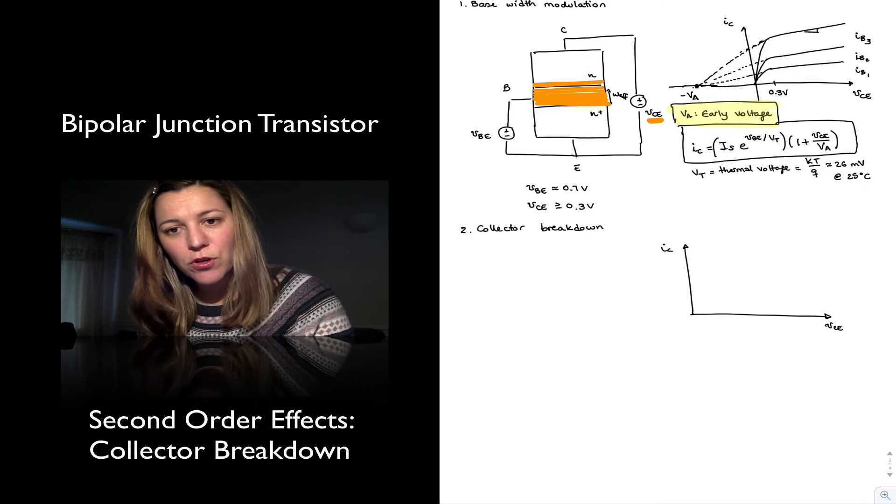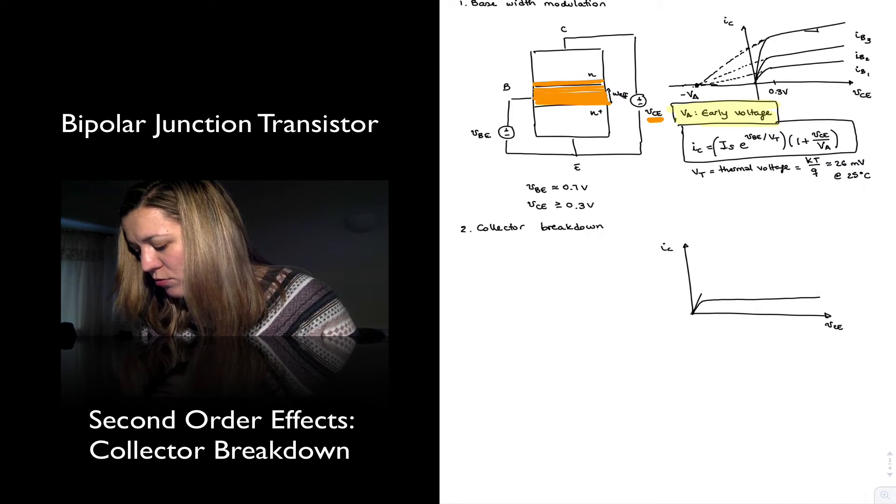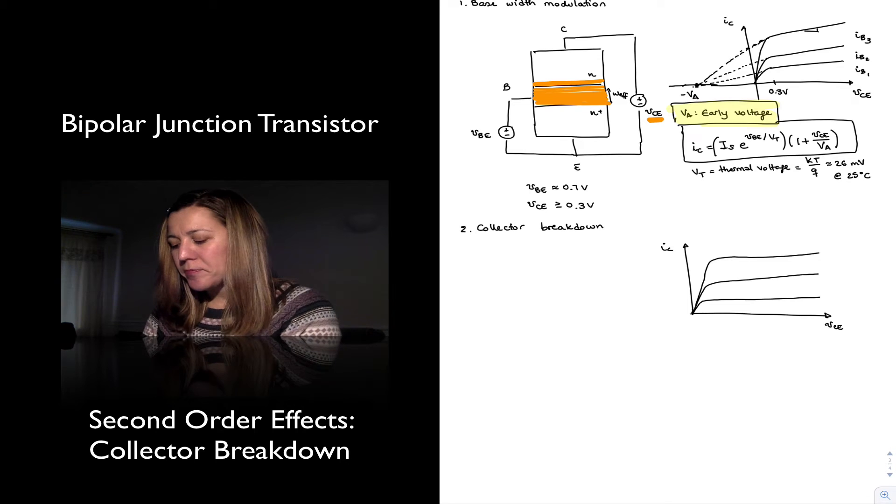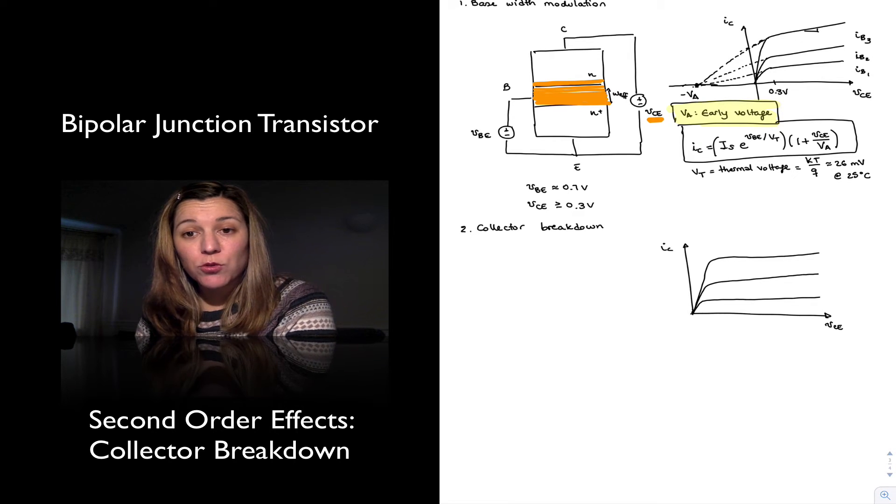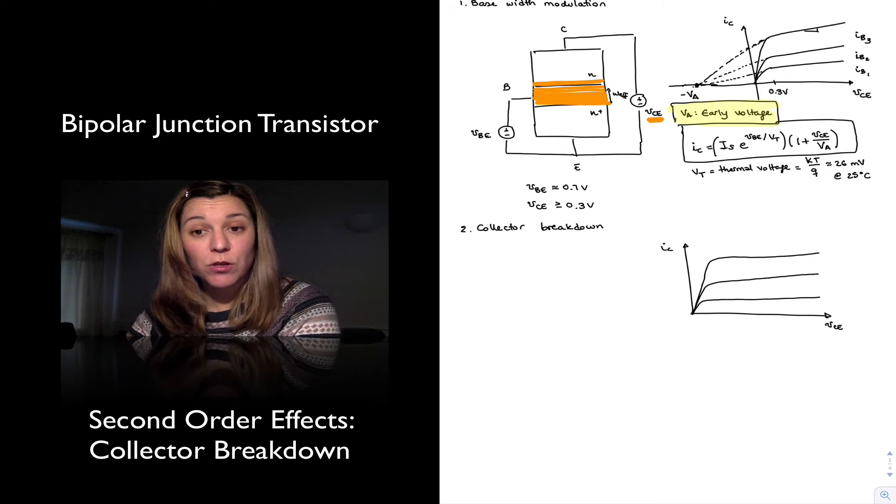And I'm going to draw it with base-width modulation already since we know about it. So this is the new IV characteristic, a little bit exaggerated. But it will appear that you can continue to increase your collector to emitter voltage, and the trend will continue.